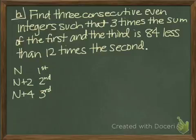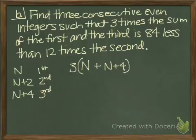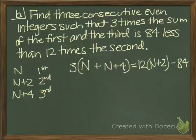It says the sum of the first and the third. So we need the sum of the first and the third, and we need 3 times that. So 3 times the sum of the first and the third is 84 less than 12 times the second. So 12 times the second number, and then 84 less. So now we can solve.